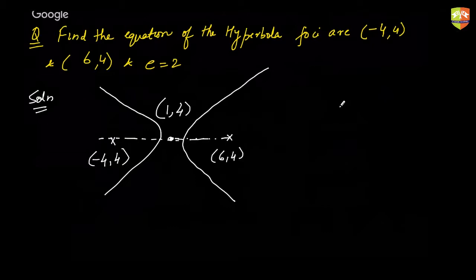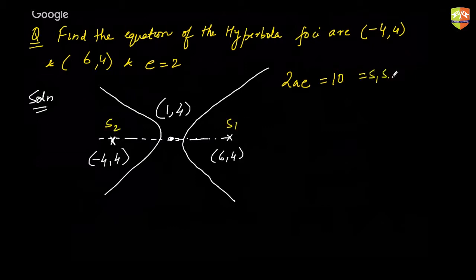Center is (1, 4). Now, how do we get A and B? The distance between the two foci is 2Ae, which is 10 in this case. So S1S2 = 2Ae. Since e = 2, A becomes 5/2.